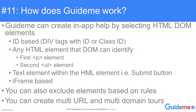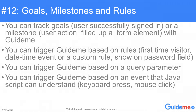You can create multi-URL and multi-domain tours. Goals, milestones, and rules — you can track goals, such as a user successfully signing in, or a milestone such as a user action, like filling up a form element with GuideMe. You can trigger GuideMe based on rules: first time visitor, date-time event, or a custom rule such as show on password field.